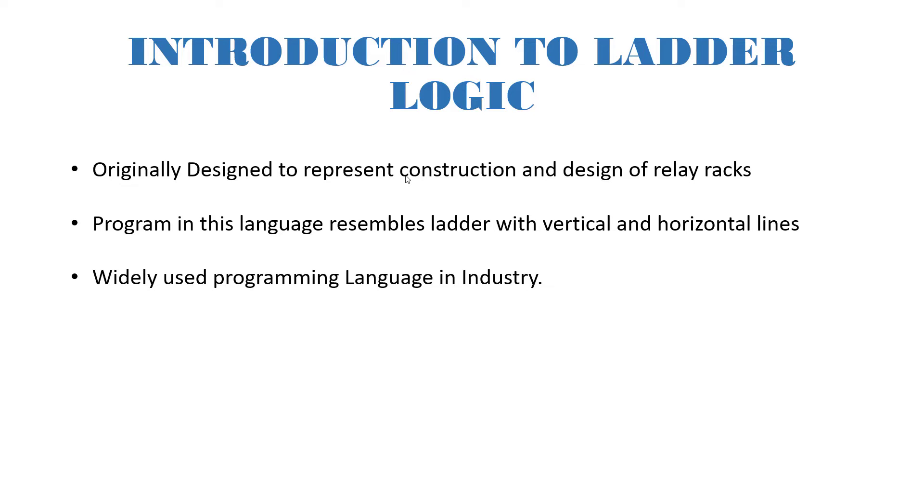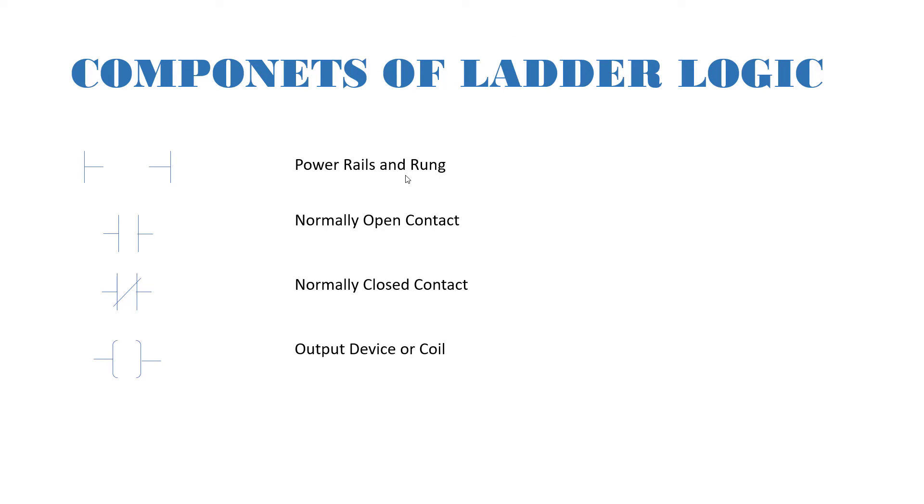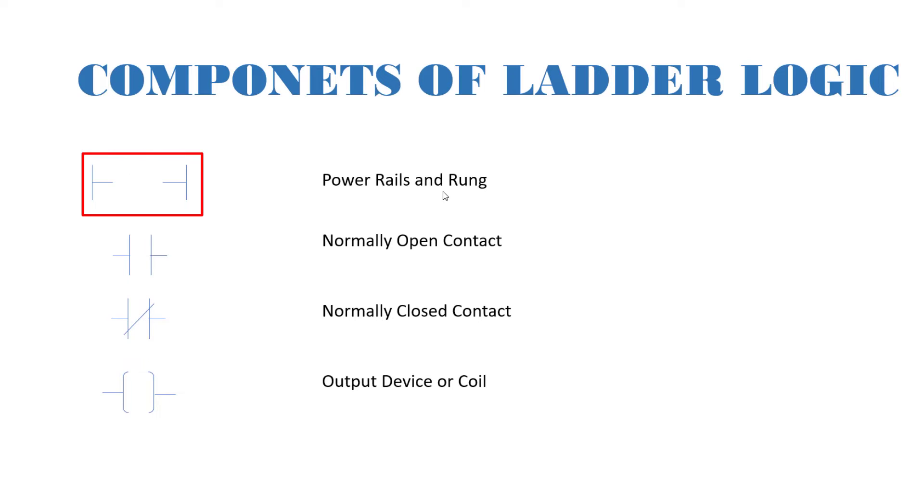Okay so now we'll look quickly at some components of ladder logics. We have four most important components, the first being our power rail also known as the rung. We have the left rung and right rung, and whenever you want to program you need to choose this rung that you'll be linking to create your logics.